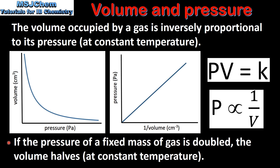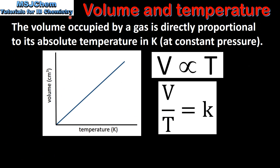For example, if the pressure of a fixed mass of gas is doubled, the volume halves at constant temperature. Next we look at the relationship between the volume and temperature of an ideal gas, which is otherwise known as Charles' law.